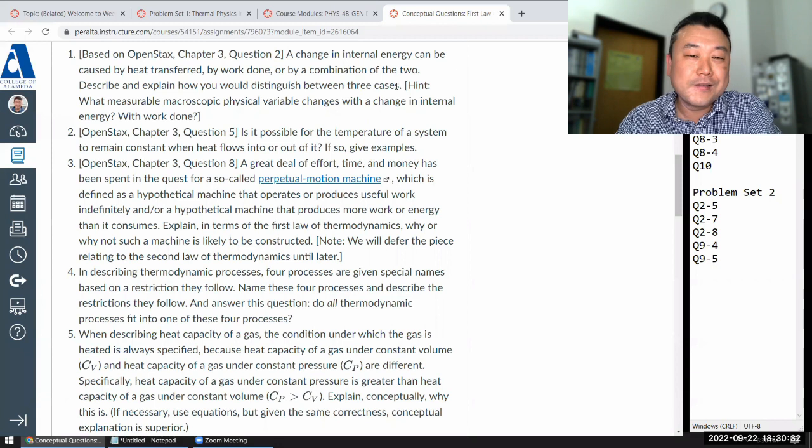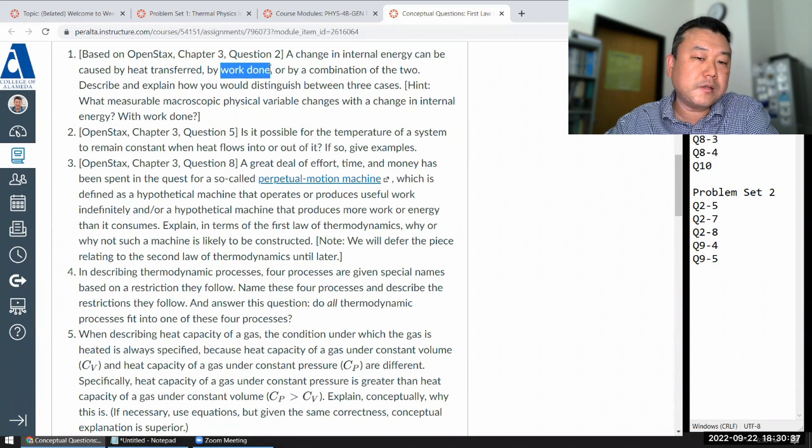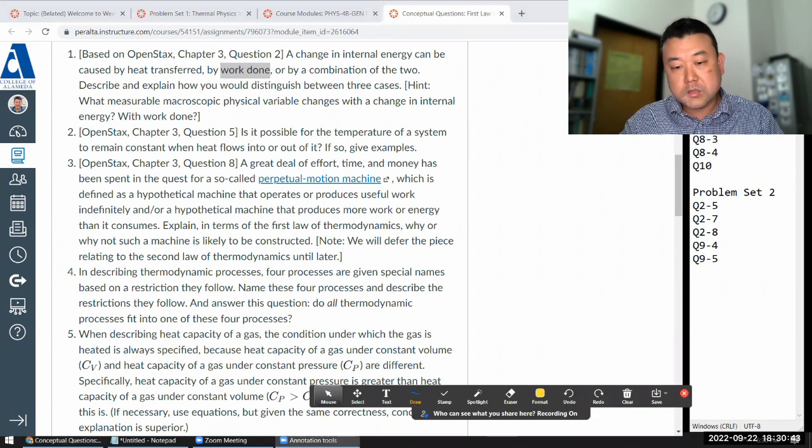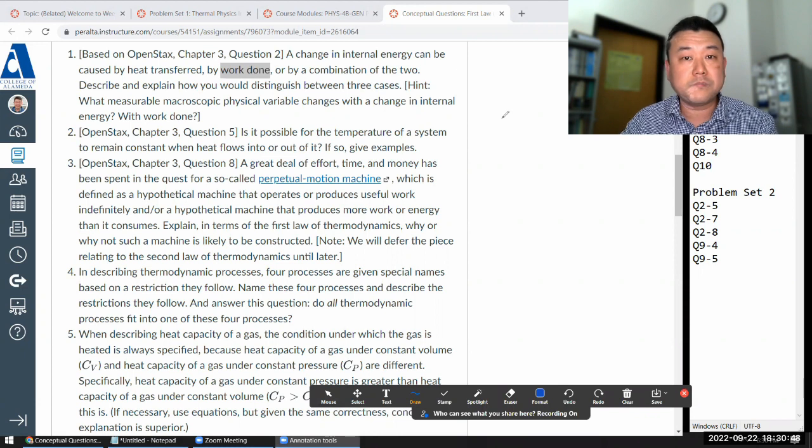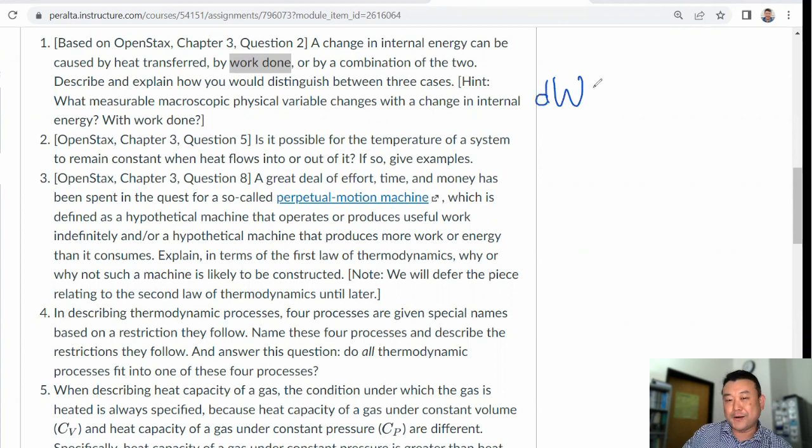It goes to the first law of thermodynamics. Work done is probably the easiest one because in our context, we have the derivation of work done for a gas system where infinitesimal work done is given by pressure times infinitesimal volume change. To get total work done, you integrate over. So whenever you have work done, you have a change of volume under some kind of pressure. That's a good starting place.